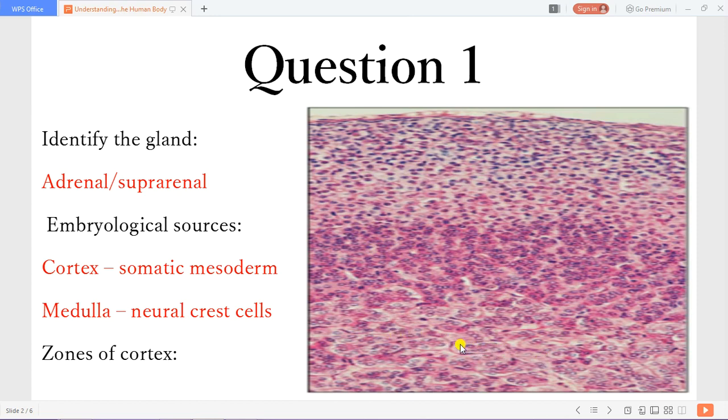Then now this is the adrenal medulla. You can see these ovoid cords that are organized. And usually this pattern is characteristic of sinusoidal systems. So usually you have draining sinusoids that drain the venous blood from the adrenal cortex and also will take from the medullary vein. So you can appreciate that here you have an adrenal sinusoid.